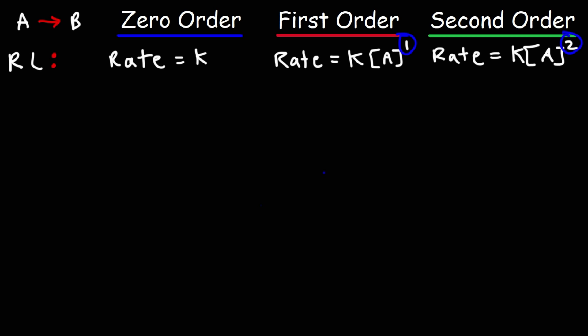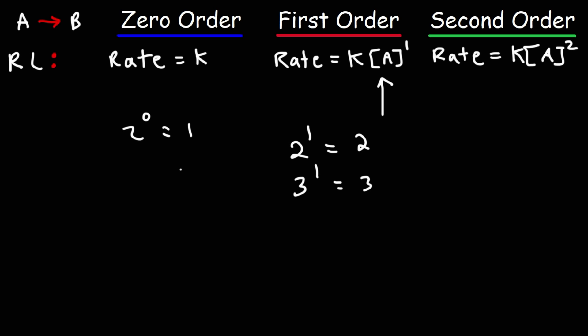The order of the reaction is based on the exponent. For a first order reaction, if you double the concentration of A the rate is going to double; if you triple it, the rate triples. For a zero order reaction, if you double or triple the concentration of A it has no effect on the rate — three to the zero power is one.